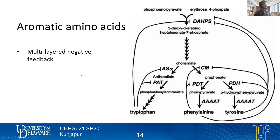We're almost through covering how this works in some native pathways, including those for which regulation keeps a key metabolite at a relatively fixed concentration — this idea of homeostasis. Last time we looked at the aromatic amino acid biosynthesis pathway as one example of multilayered negative feedback.